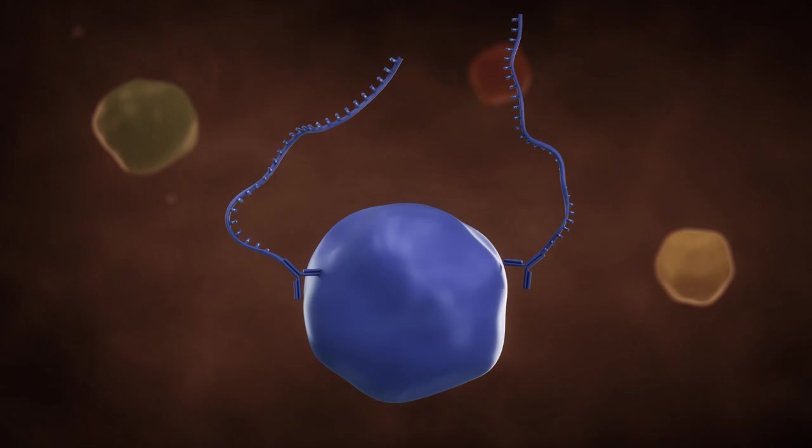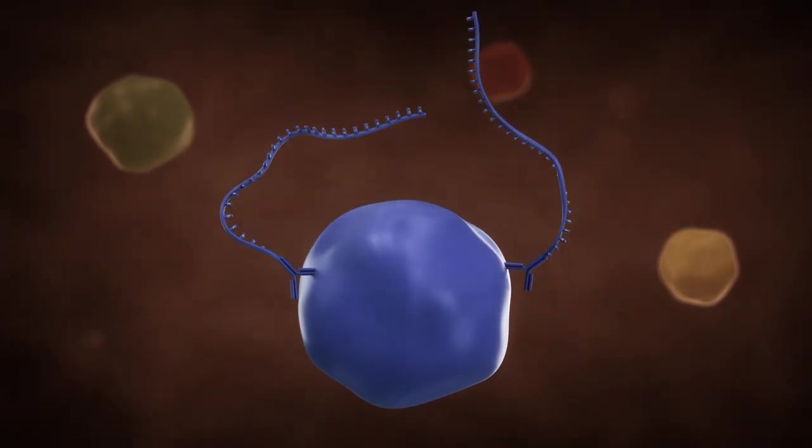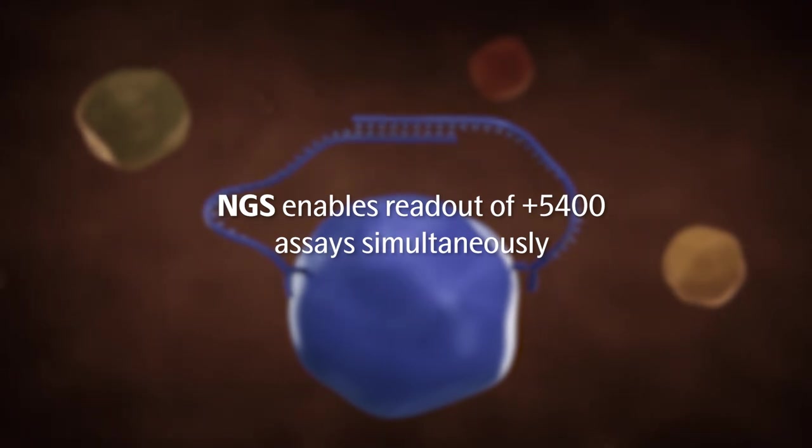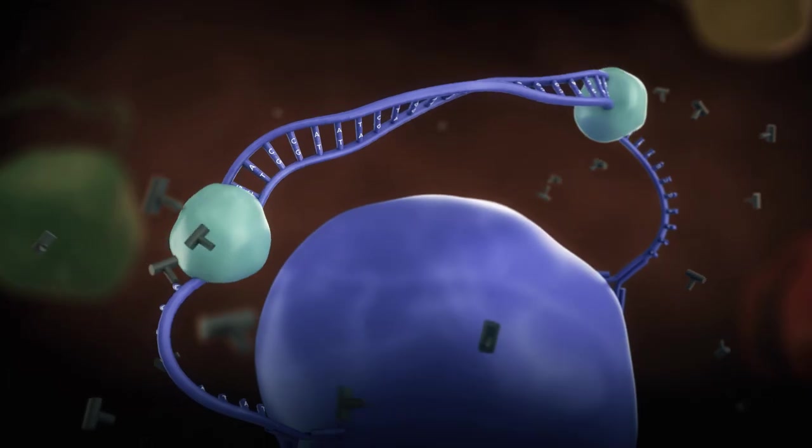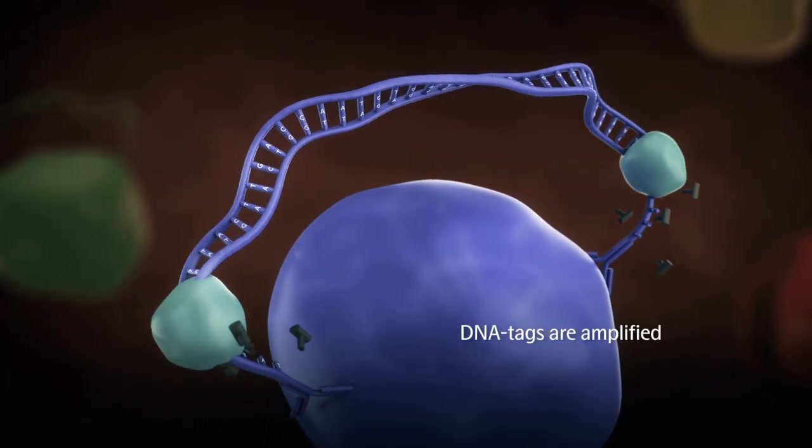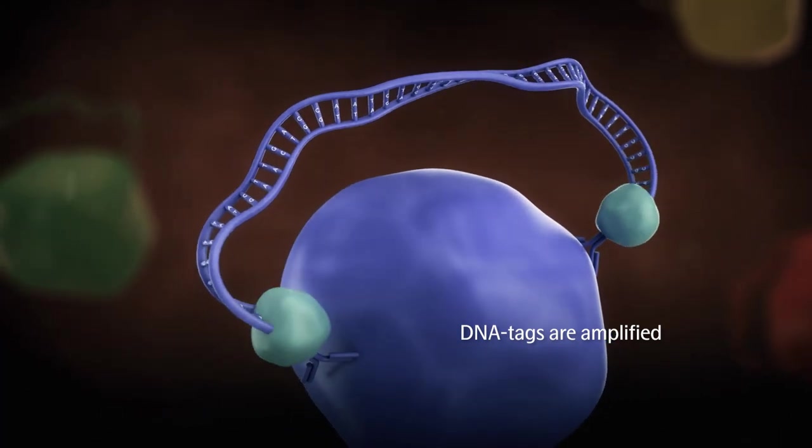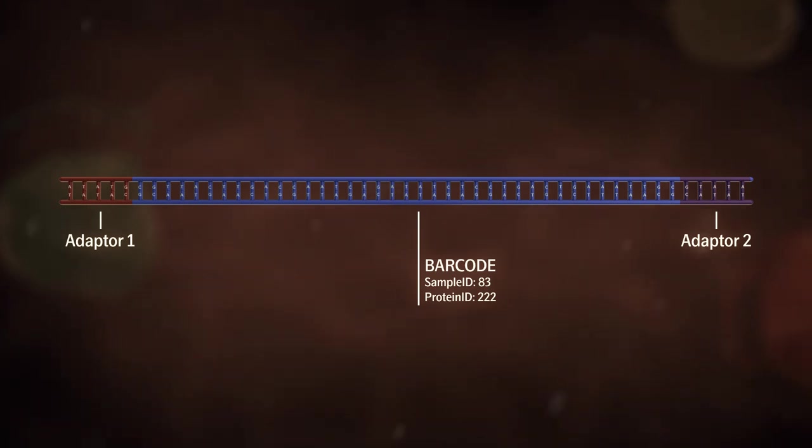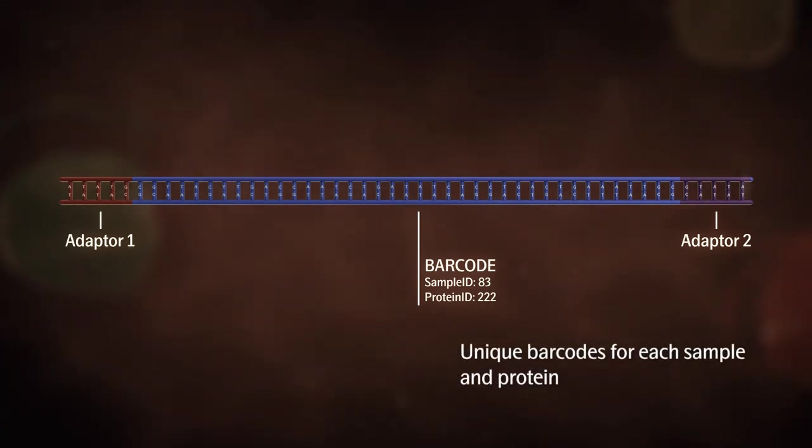O-link Explore, using NGS, enables readout of several thousands of assays simultaneously. The DNA amplicons are amplified using standard PCR. The sequences are designed to include adapters to facilitate correct direction for sequencing and unique barcodes to identify which protein and sample are detected.